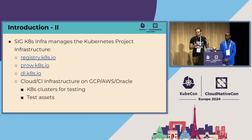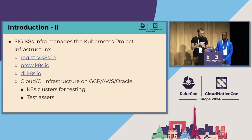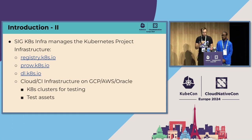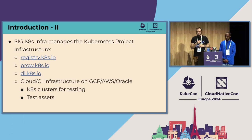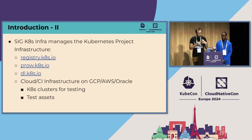So what is SIG K8s Infra? SIG K8s Infra manages the Kubernetes project's own infrastructure. That includes the registry we serve container images from, Prow — which is our CI system — DL.k8s.io that serves binaries, and all of the expansive CI/CD infrastructure we use for running E2E tests and all the things to make sure the Kubernetes project is reliable.